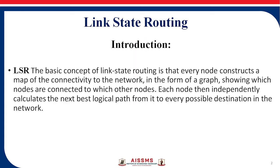In the previous lecture, we have seen DVR — Distance Vector Routing. So before going to start with Link State Routing, I will explain the difference between Link State Routing and Distance Vector Routing. When we are using DVR, we circulate the entire routing table to the nearest neighbor. But when we are using Link State Routing, we send only the Link State information to the nearest neighbor. That is the main difference between these two routings.